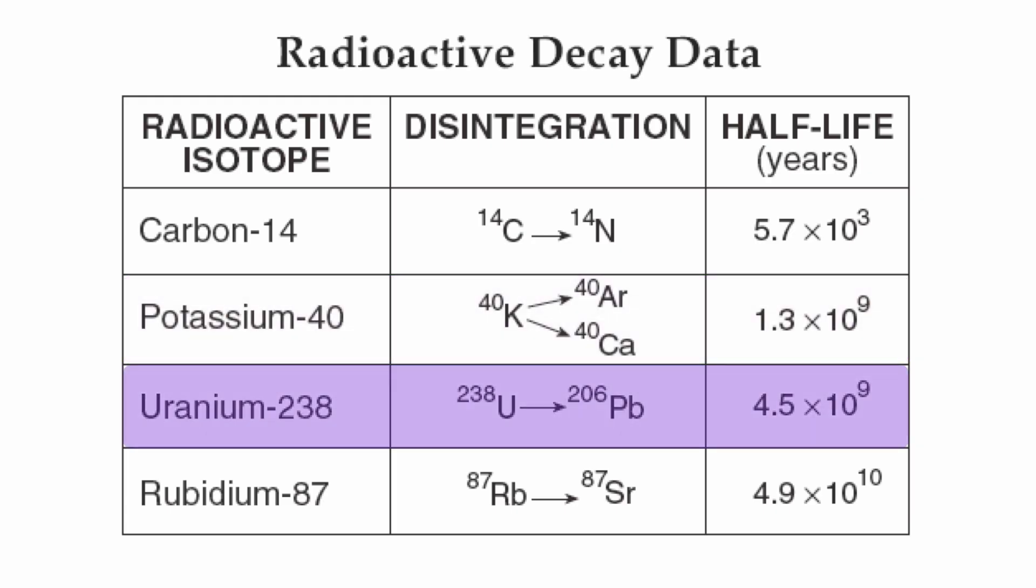The next isotope is uranium-238. The U-238 changes into lead-206, and it takes 4.5 billion years for uranium to change into lead.